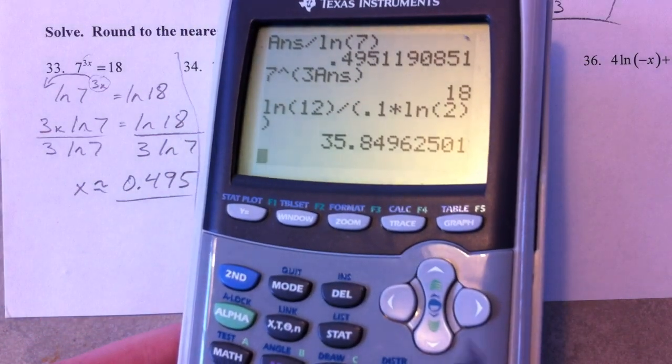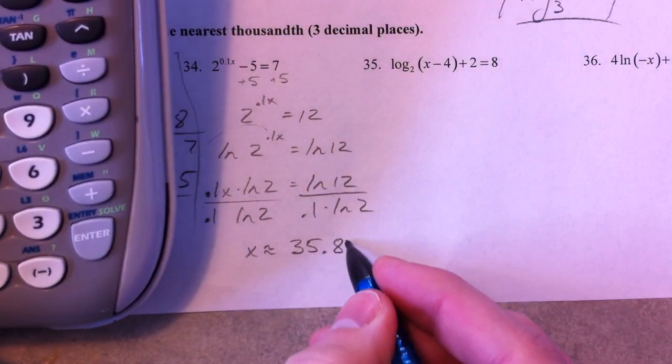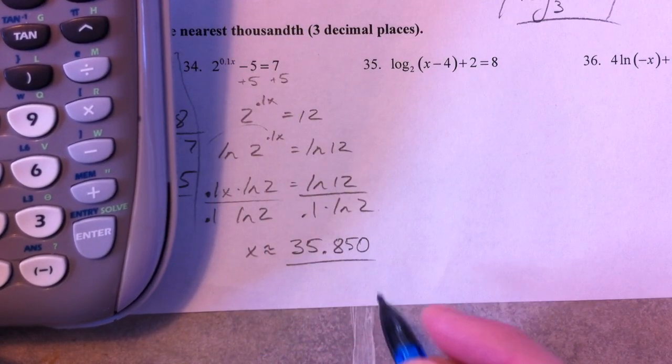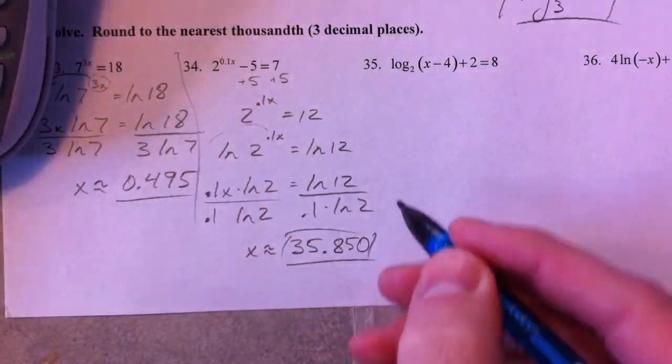And so, notice this 8496. The 6 is going to round up the 9, so it's going to be 0.850. 6 is rounding up the 9. Cool.